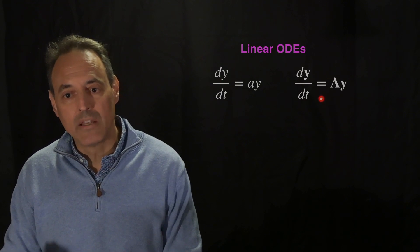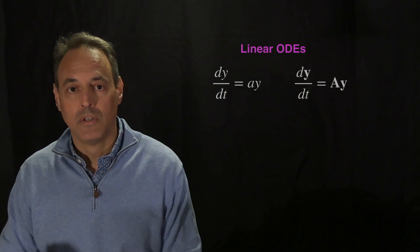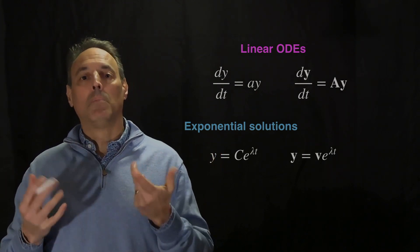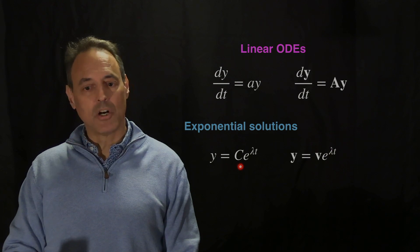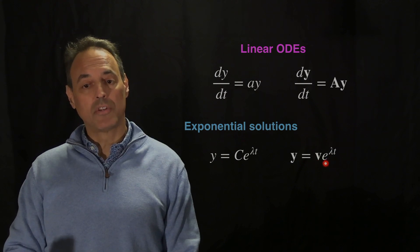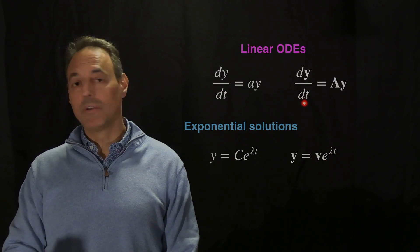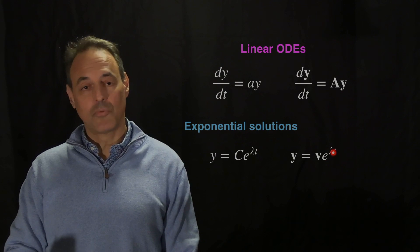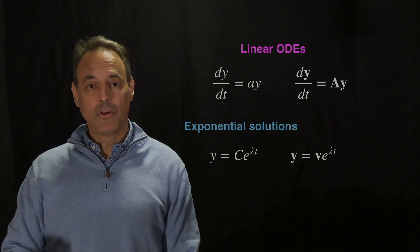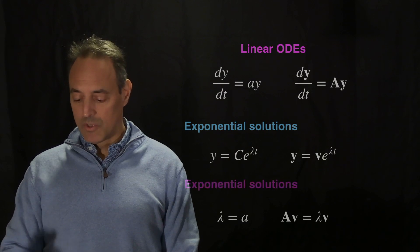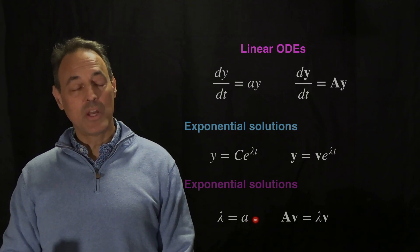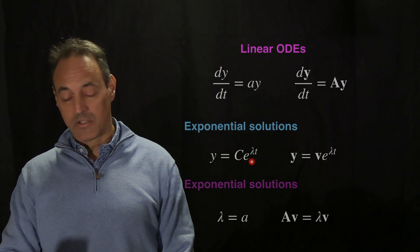Here are the solutions for the linear time-invariant differential equations, either in 1D or n dimensions. The one technique available for solving these is to plug in an exponential. For the 1D case, plug in a constant c·e^(λt). For the n-dimensional case, y is some vector v times e^(λt). Since e^(λt) is where all the time dependence lives, you only have to take one derivative: the derivative of e^(λt) is λ·e^(λt). In the 1D case, this gives λ = a, so if you know a, the solution is e^(at).